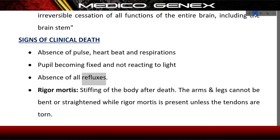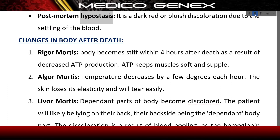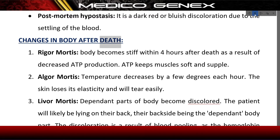Further signs of clinical death include absence of all reflexes. Rigor mortis is the stiffening of the body after death — the arms and legs cannot be bent or straightened while rigor mortis is present unless the tendons are torn. Post-mortem hypostasis is a dark red or bluish discoloration due to the settling of the blood.